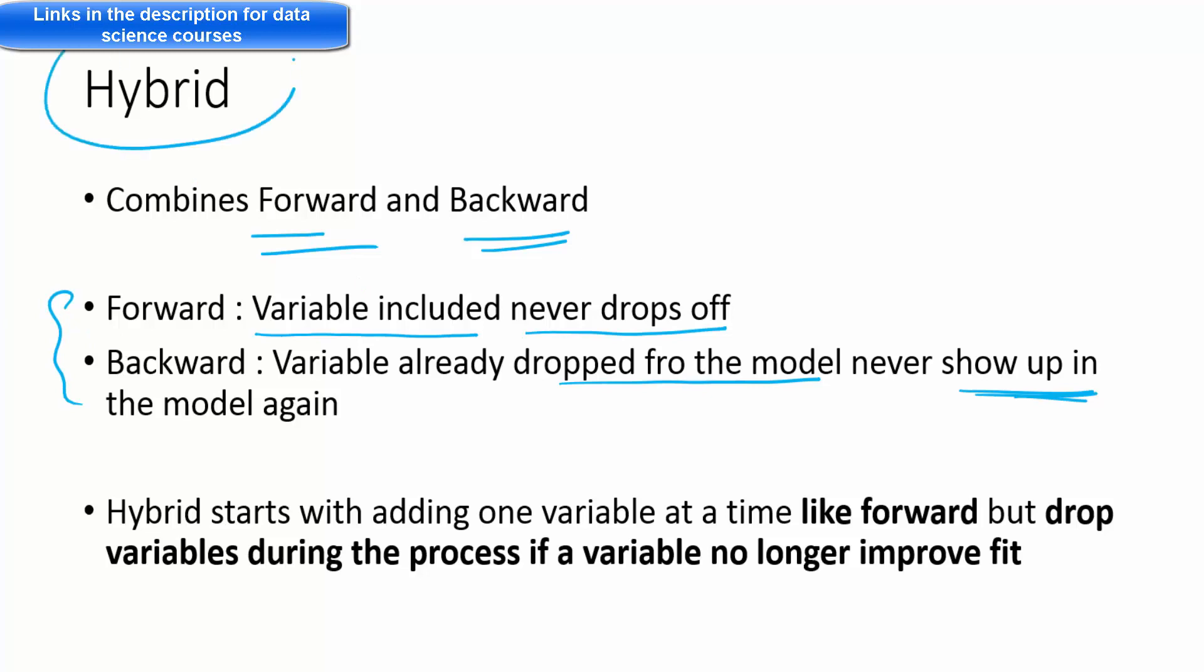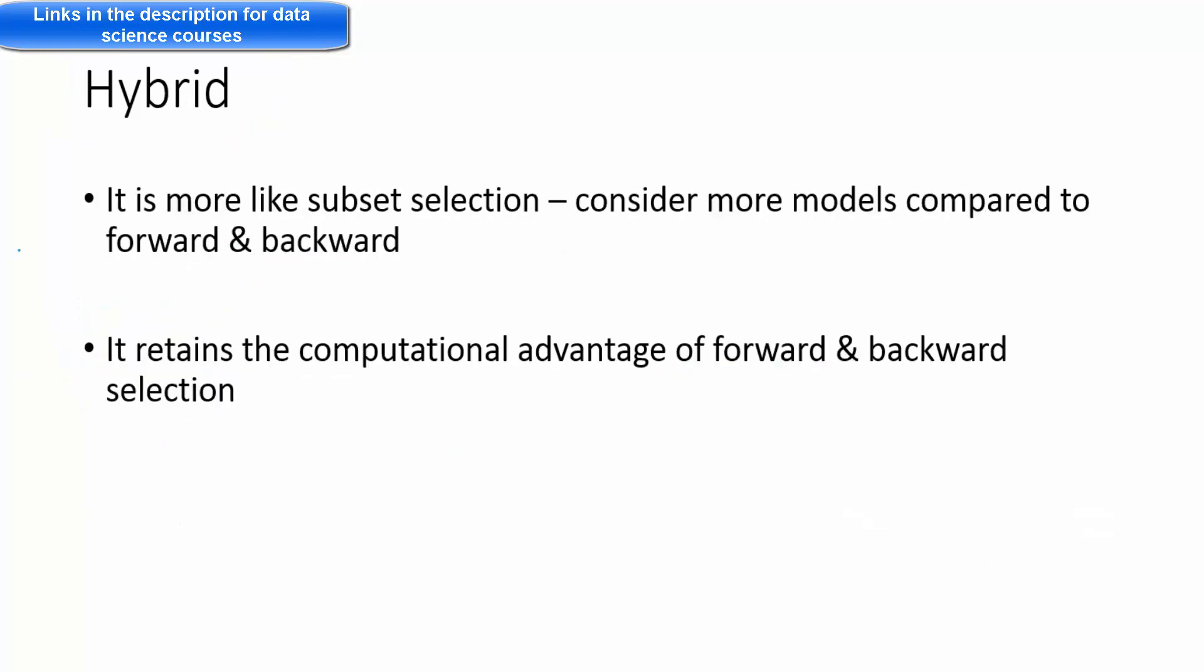The hybrid model combines both approaches. Hybrid starts with adding one variable at a time like forward, but drops variables during the process. If a variable gets dropped, it never shows up again, so it combines the features of both forward and backward selection.